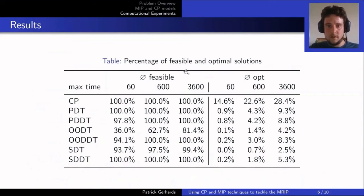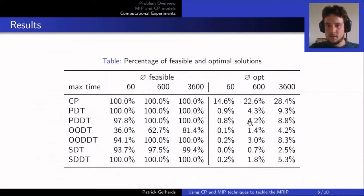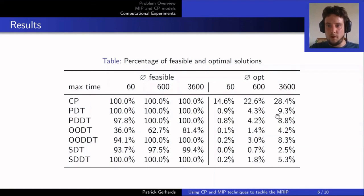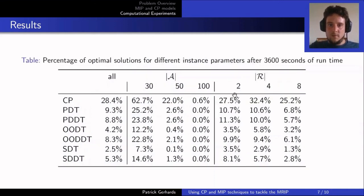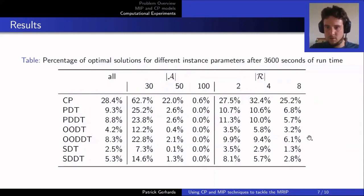Interestingly, when looking at the number of optimal solutions found in 60 seconds, CP found more optimal solutions than MIP formulations in one hour. CP solved more instances. Looking at instance features: instances with 30 activities were mostly solved to optimality. For CP the number of resources didn't matter much, but MIP formulations showed a performance difference with more resources.